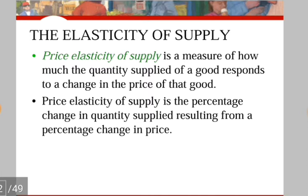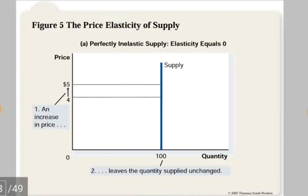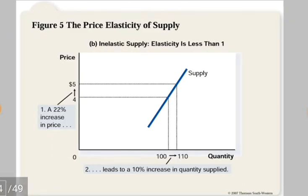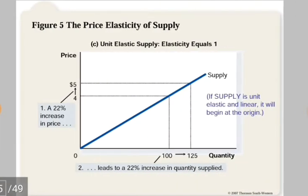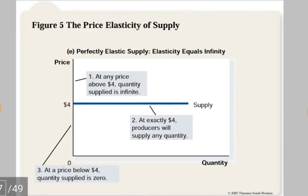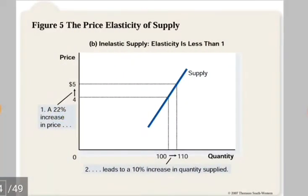Now let's look at price elasticity of supply, which is quite similar to price elasticity of demand with some changes. Price elasticity of supply is a measure of how much the quantity supplied of a good responds to a change in the price of that good — specifically the percentage change in quantity supplied resulting from a percentage change in price. Similar curve cases apply: if elasticity is zero the line is a vertical line; we also have cases where elasticity is less than one, equal to one, greater than one, and equal to infinity.